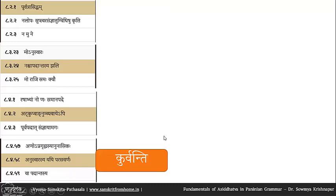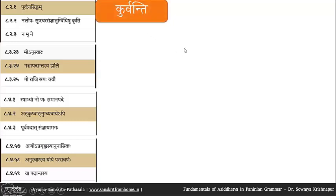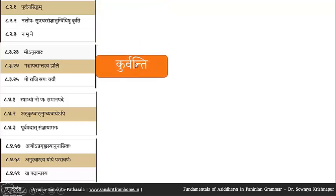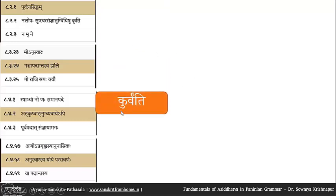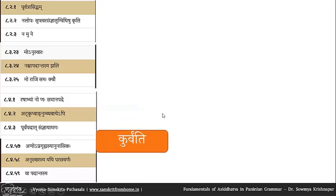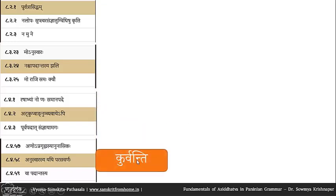This seemingly redundant operation — nakara converted to anuswara, then anuswara converted back to nakara — is actually Panini's clever structuring. Even though it appears redundant, it achieves the purpose of escaping natva, purely because of this anuswara conversion. Otherwise, atkupvagnum vyavayapi would have converted the nakara to nakara, leading to undesirable forms.